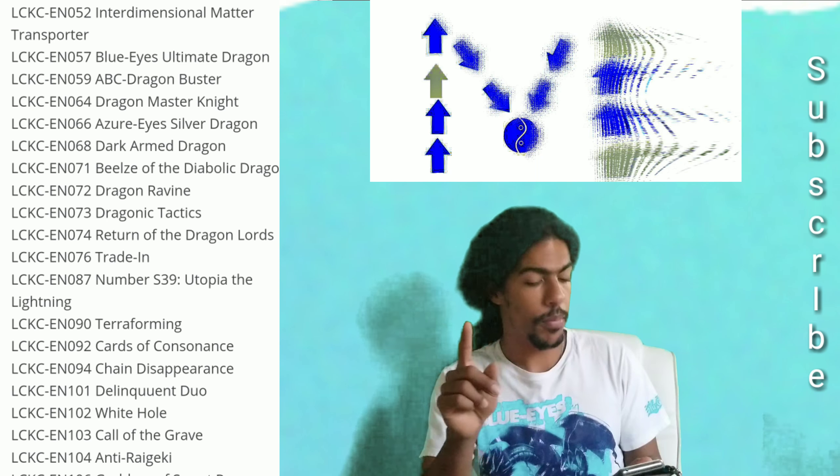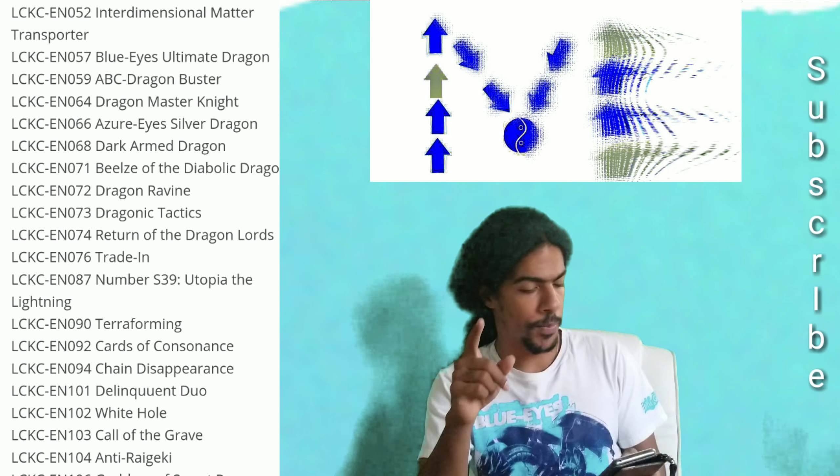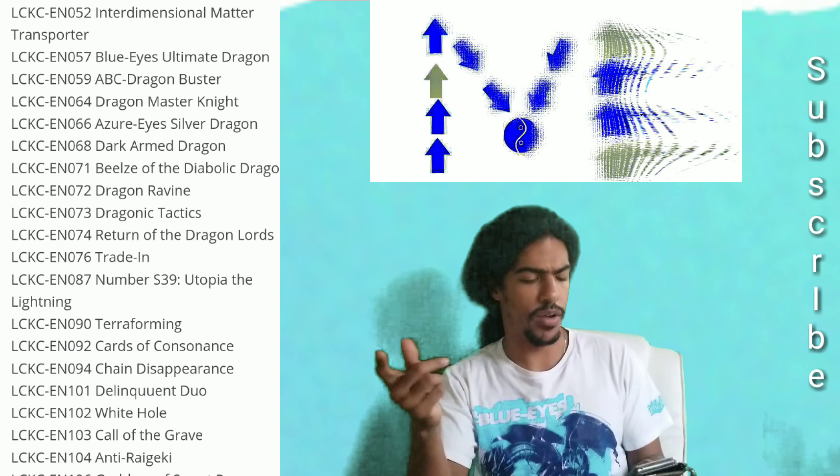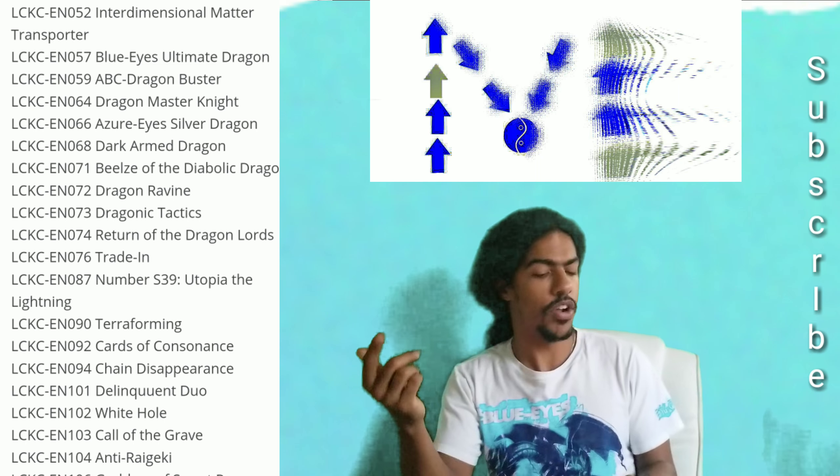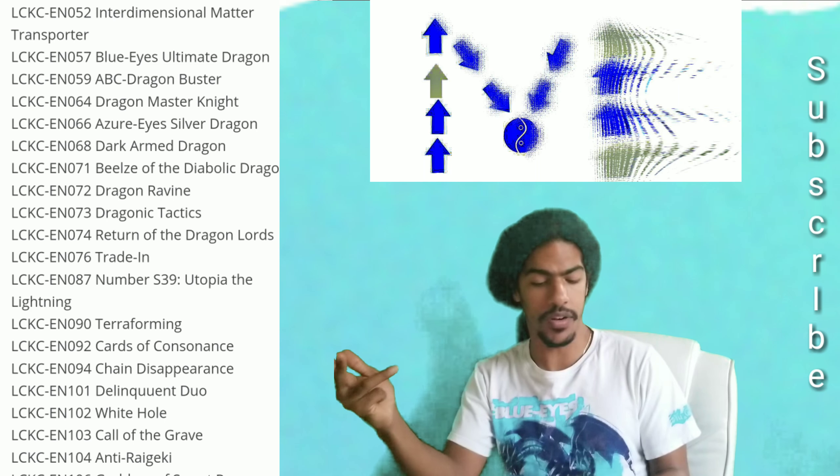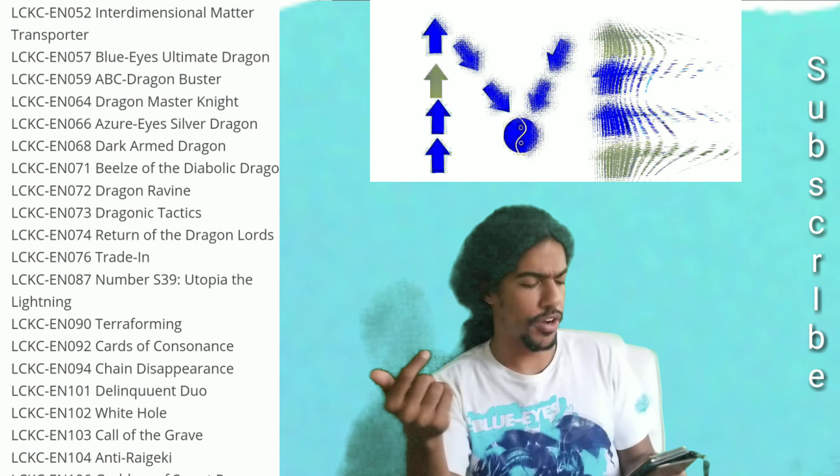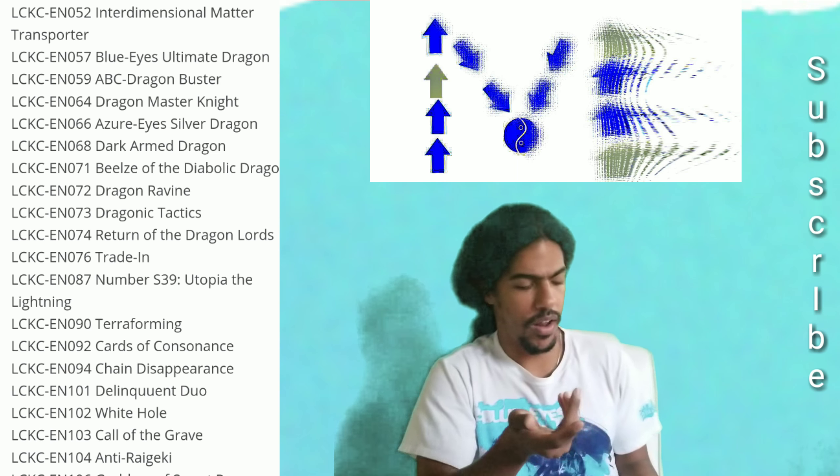Interdimensional Matter Transporter, Blue-Eyes Ultimate Dragon, ABC Dragon Buster, Dragon Master Knight, Azure-Eyes Silver Dragon, Dark-Armed Dragon, Beelze of the Diabolic Dragons, Dragon's Ravine, Dragonic Tactics, Return of the Dragon Lords, Trade-In. And this is pretty cool, they have number S39 Utopia the Lightning in this set. They really want to just let everyone have that card.